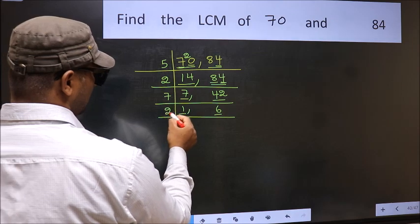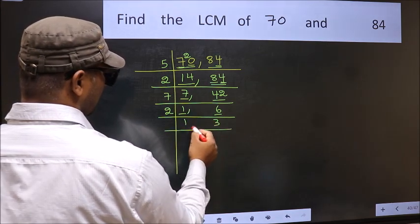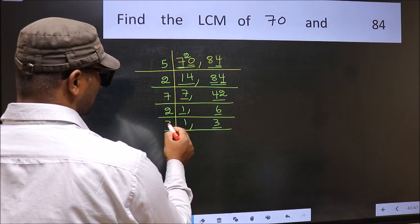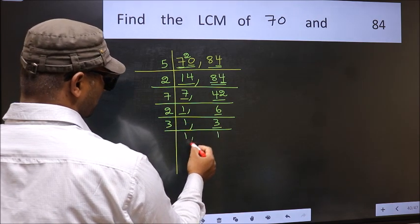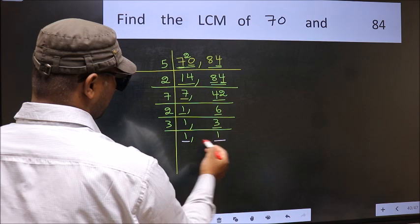6 is 2 threes 6. Now we have 3, 3 is a prime number so 3 once 3. So we got 1 in both places.